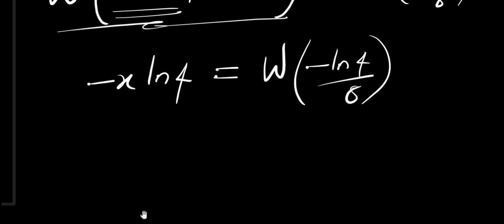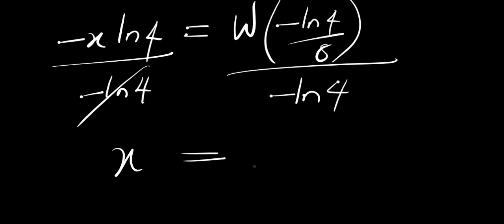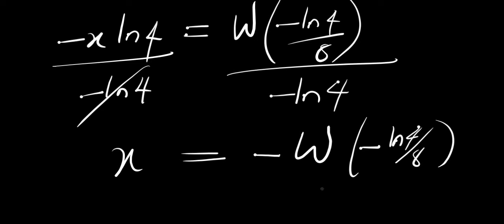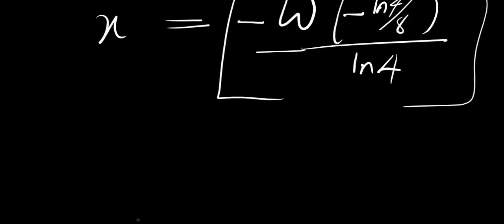Since we are solving for x, we divide each part of this equation by negative ln(4). This cancels on the left side, giving us x equals negative Lambert W of (negative ln(4) divided by 8), all divided by ln(4). If you type this into your calculator using the product log as W, you will get a value for x.